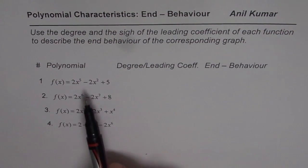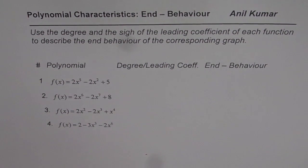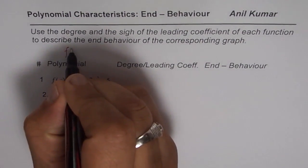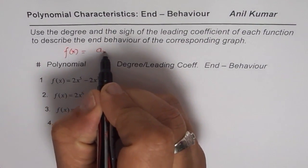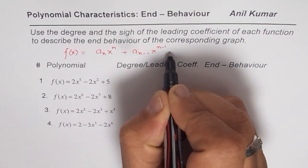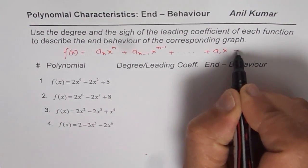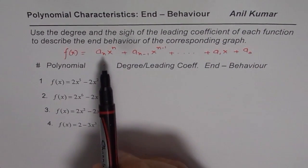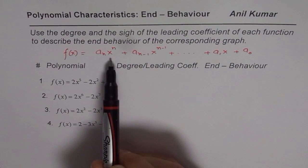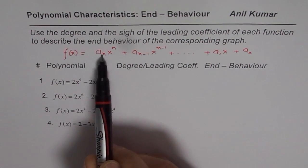You need to identify their degree, leading coefficient, and from them we can find the end behavior. You can pause the video, answer the question, and then look at my suggestion. In general, a polynomial can be written as f(x) = Aₙxⁿ + Aₙ₋₁xⁿ⁻¹ + ... + A₁x + A₀. The degree of the polynomial is the highest exponent, which in this case is n, and Aₙ is the leading coefficient.